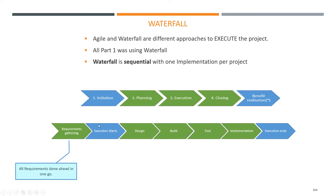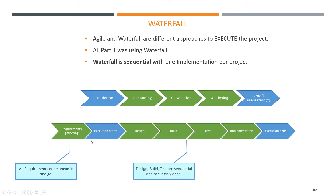For Waterfall, during planning, we ask the business to provide us all the requirements. We say: what do you want exactly? Write this big document, put all your requirements in there, you sign them off, and you hand them to us. And then we go into Execution, and we design based on this big document, we build based on this large document, and we test based on this large document.